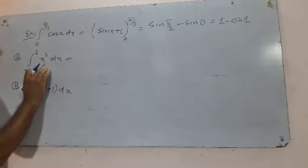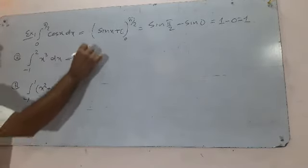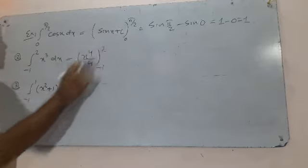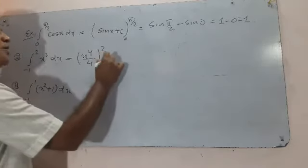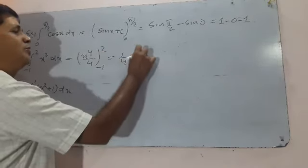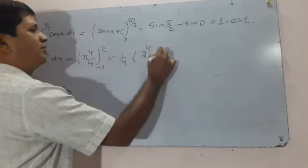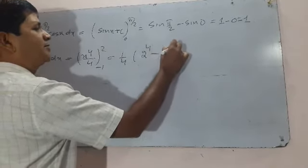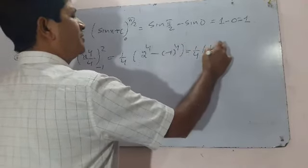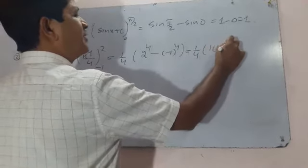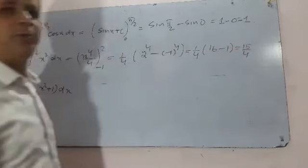For part (b), the integration of x³ is x⁴/4, evaluated from -1 to 2. This equals (1/4) × [2⁴ minus (-1)⁴] = (1/4) × (16 - 1) = 15/4.